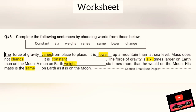The last question is number six — again it's a fill-in with a word bank. The force of gravity varies from place to place; it's lower up a mountain than at sea level. Mass does not change — it is constant. The force of gravity is six times larger on Earth than on the Moon. A man on Earth weighs six times more than he would on the Moon, but his mass is the same. So mass does not change, but weight changes and it depends on the gravitational force of the planet.